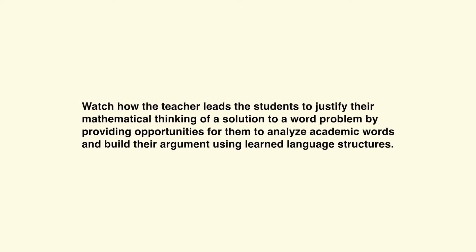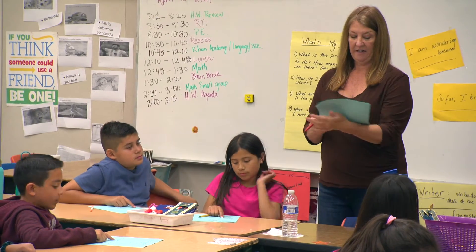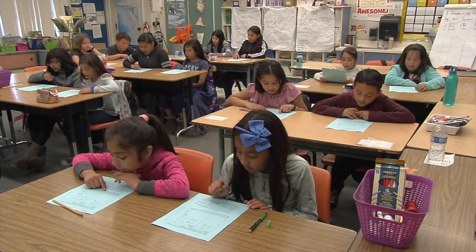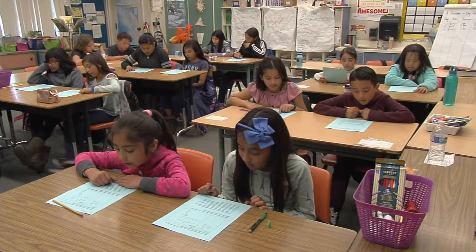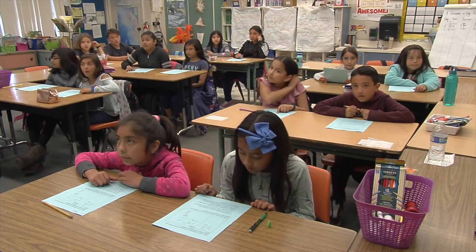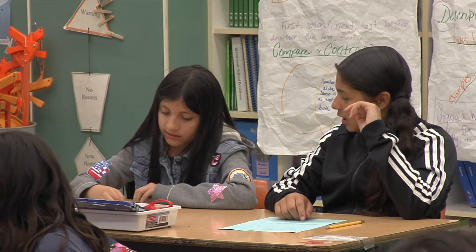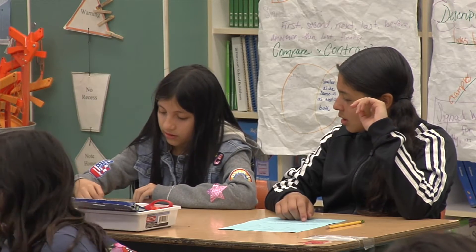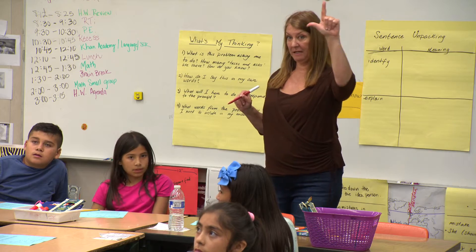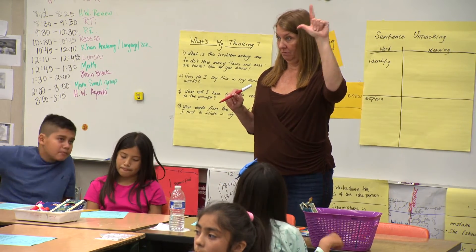Watch how the teacher leads students to justify their mathematical thinking by providing opportunities to analyze academic words and build their argument using learned language structures. The teacher reads the directions: 'Identify the method where Alberto made a mistake and explain what he should do to correct it.' She asks: 'What are the two things we need to do?' A student responds: 'We have to identify and explain the mistake that Alberto made.' The teacher confirms: 'Two things, right?'